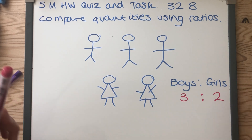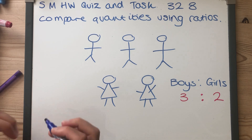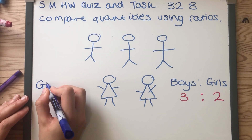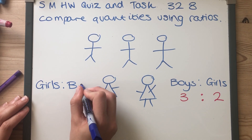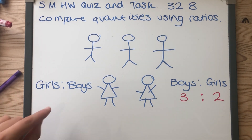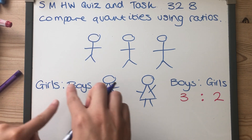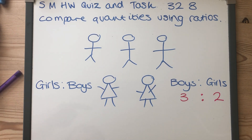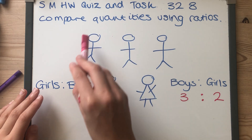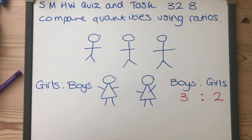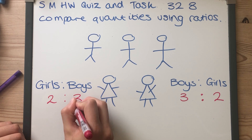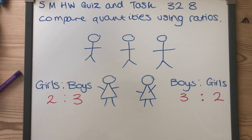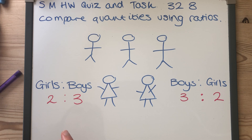I could also be asked for the ratio of girls to boys, and that does change the answer. It's important to acknowledge that changing the wording around does change the answer. What do you think the ratio of girls to boys is? If you said two to three, you would be exactly right. The ratio of girls to boys in this class is two to three.